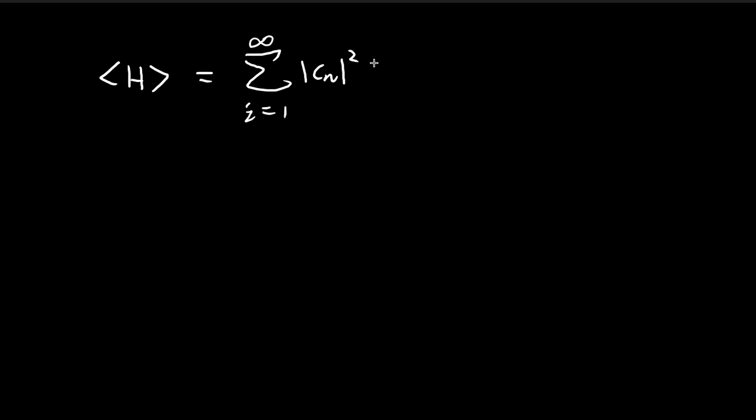So in the book, it was proven that the expected value of energy can be given by this formula, where c is going to be the constant terms in front of each of the stationary states. So recall that for your complete wave function, you're going to have your constants that's going to help you satisfy your boundary conditions. And then you're going to have your x term and then your term that's dependent on t. So this is the entire wave function, what it looks like.